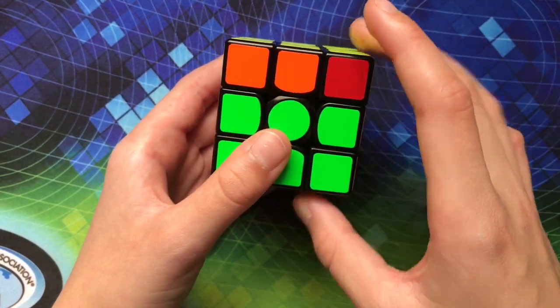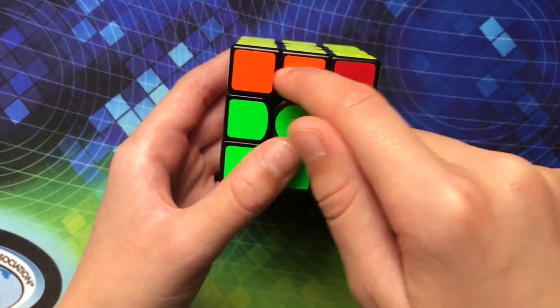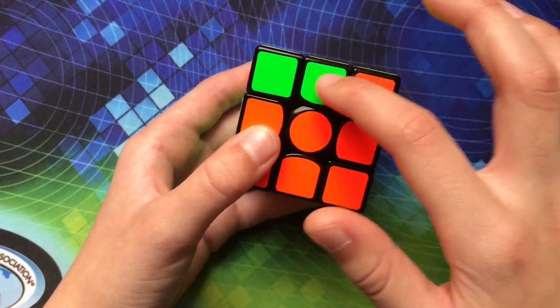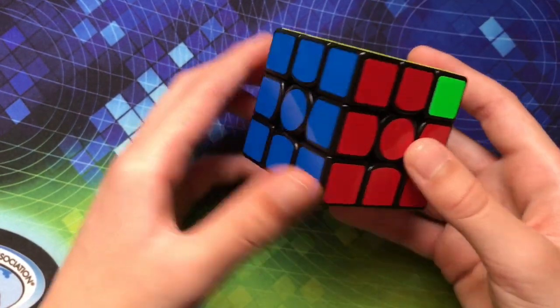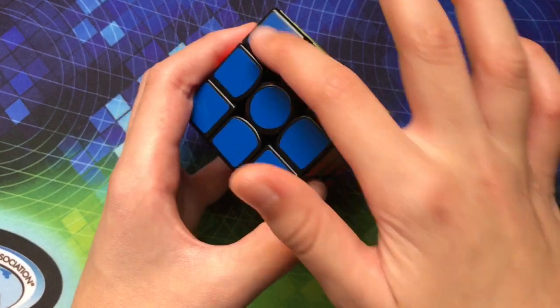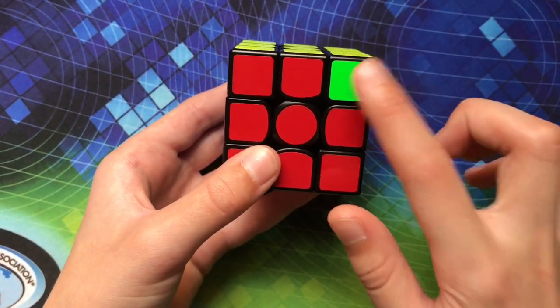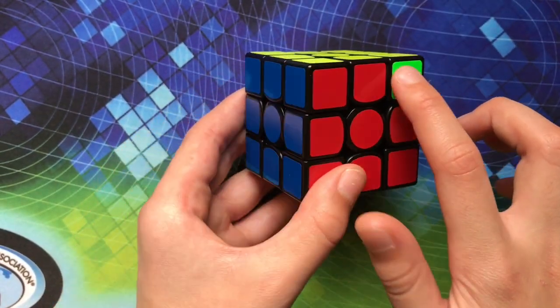So then if you turn it some more then you'll have another block of 2 pieces and then another one. So basically how I always recognize it is just this block here and then this is the only one that's unsolved on this side.